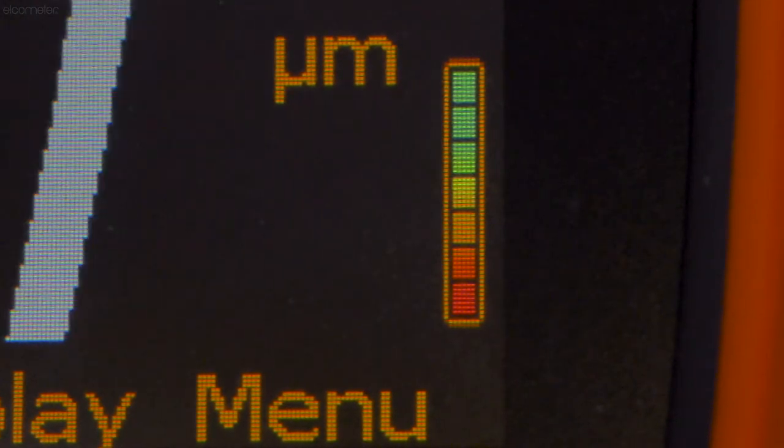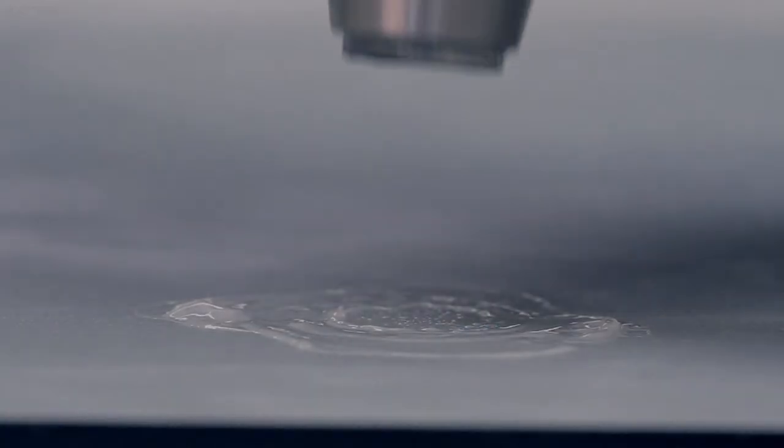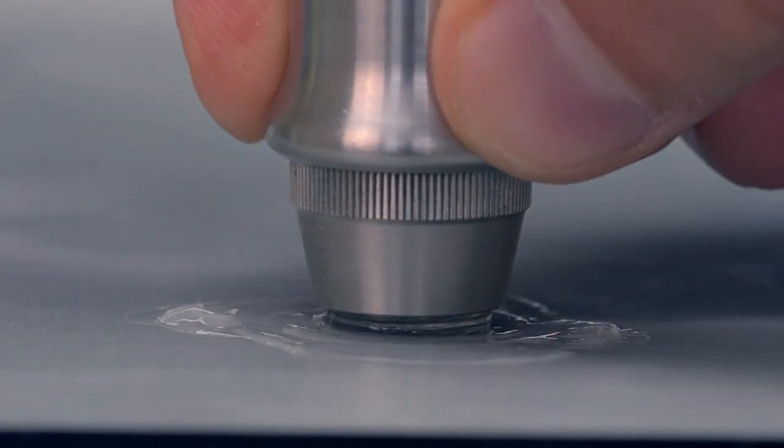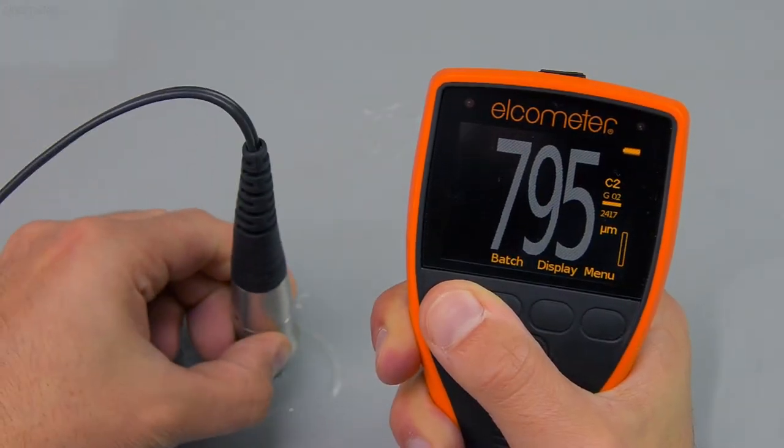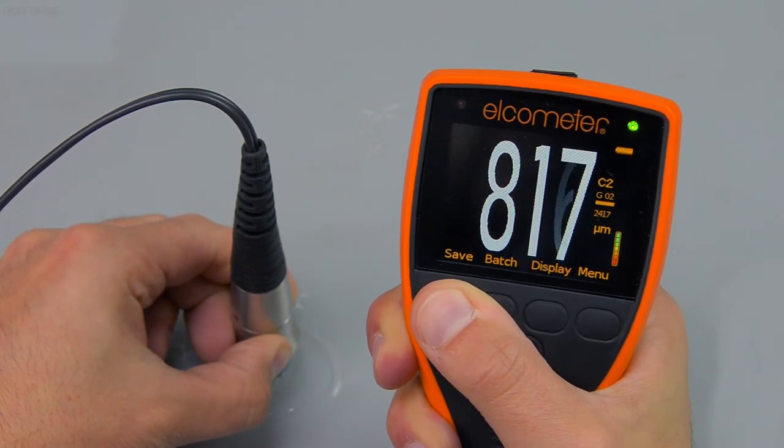The gauge determines this by taking and analyzing over 100 measurements, all in under a second, before deciding if the signal is stable and presenting a valid reading on screen, giving you confidence in the results.